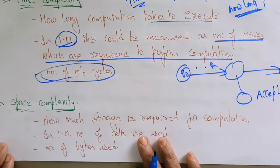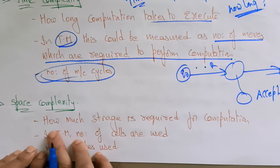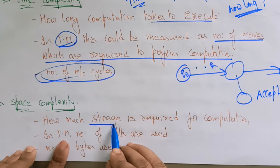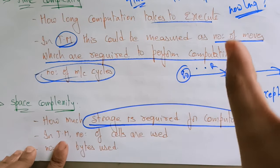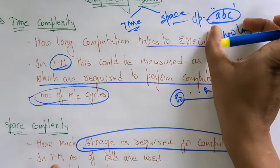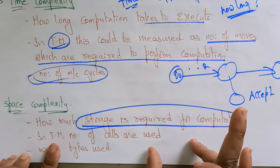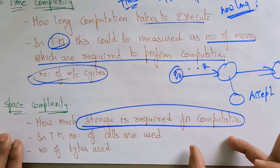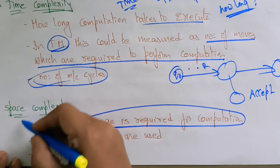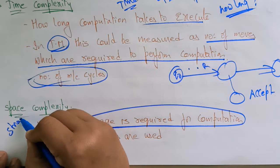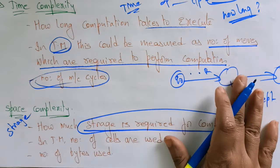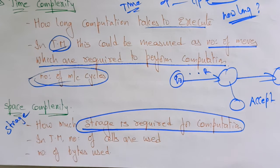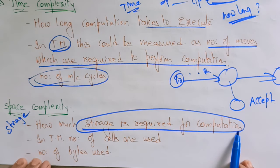Then what about space complexity? Space complexity means how much storage is required for computation. So to solve that problem, how much space is required for computation — that is the space. Space is storage. Time is how much time it takes to complete that computation. So the space complexity is how much storage is required for computation.